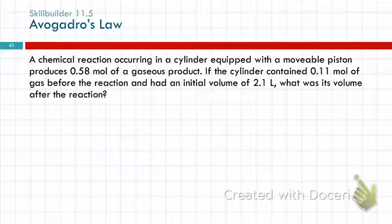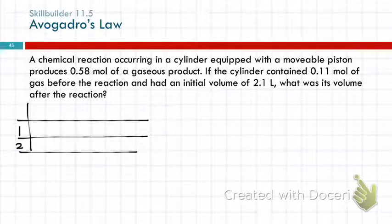Chemical reaction occurring in a cylinder equipped with a movable piston produces 0.58 moles of a gaseous product. If the cylinder contained 0.11 moles of gas before the reaction and had an initial volume of 2.1 liters, what was its volume after the reaction? Well let's identify numbers and make a table. So 0.58 moles, what do we label that column, N for amount in moles. So that's when it started, and no, it produces 0.58 moles. It contained 0.11 moles before the reaction, so put those there.